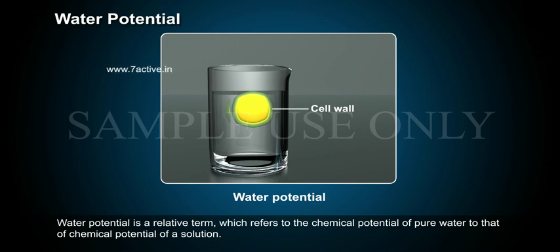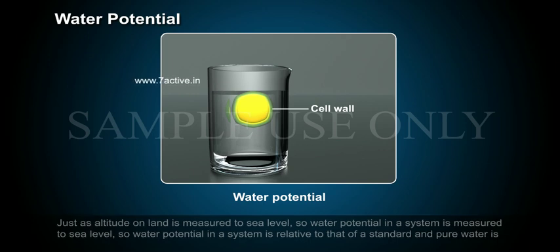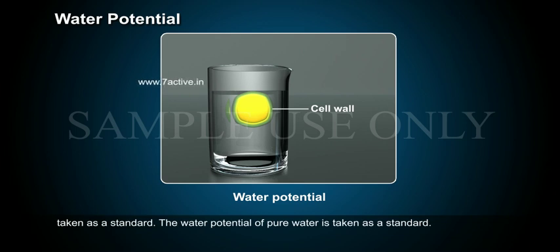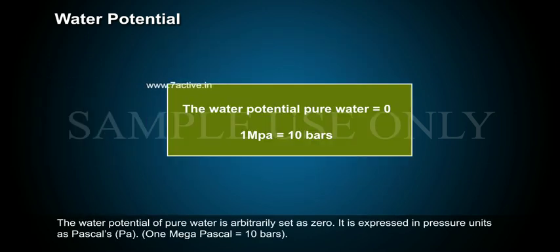Water Potential is a relative term, which refers to the chemical potential of pure water compared to that of a solution. Just as altitude on land is measured relative to sea level, water potential in a system is measured relative to a standard, and pure water is taken as that standard. The water potential of pure water is arbitrarily set as zero, expressed in pressure units as pascals (Pa). 1 megapascal equals 10 bars.